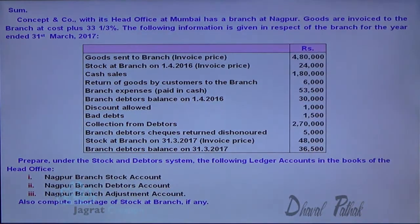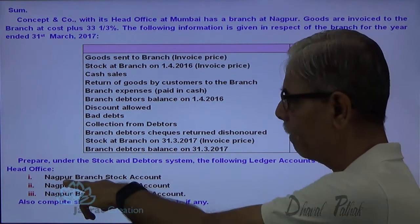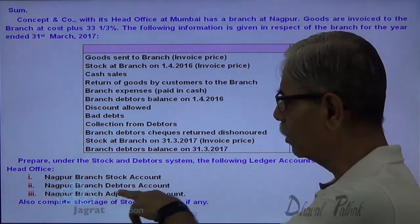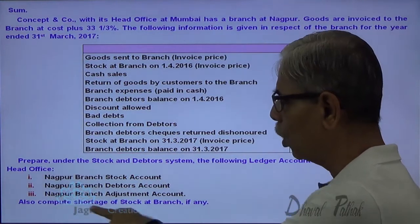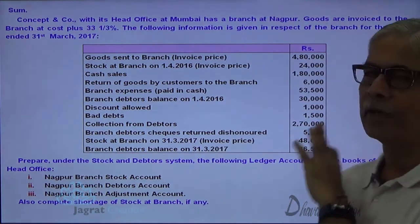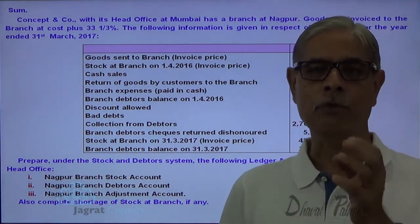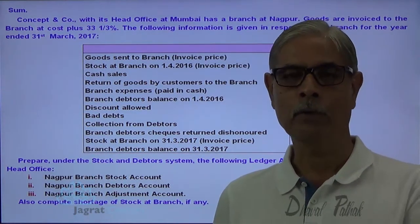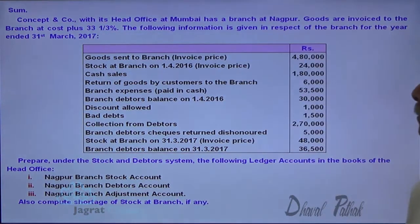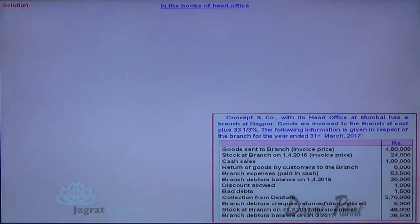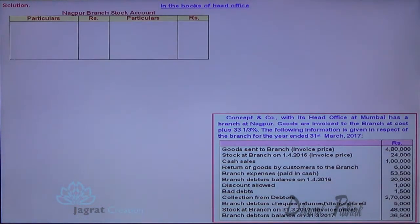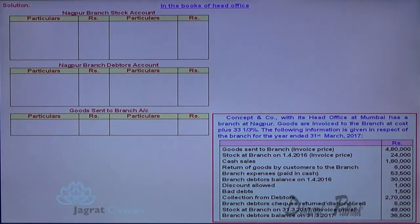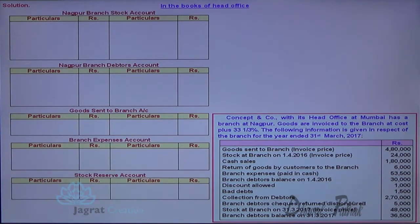Prepare under the stock and debtor system the following ledger accounts in the books of head office: branch stock account, branch debtors account, and adjustment account. Also compute the shortage of stock at branch, if any. We are required to find out the shortage of stock — that is an important point. The accounts to be prepared include goods sent to branch account, expense account, stock reserve account, and adjustment account.